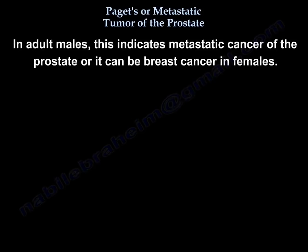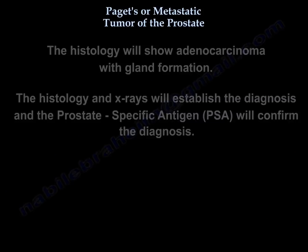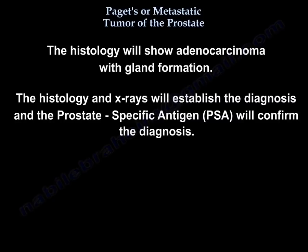In adult males, this indicates metastatic cancer of the prostate, or it can be breast cancer in females. The histology will show adenocarcinoma with gland formation. The histology and x-rays will establish the diagnosis, and the prostate-specific antigen (PSA) will confirm the diagnosis.